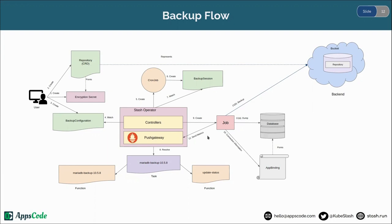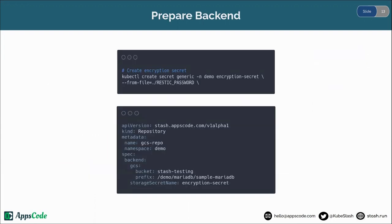Now let's prepare our backend. First we will create a secret — the encryption secret that will be used by Stash to encrypt the backup data. Then we are going to create a repository. As we are using Google Cloud Storage, we are providing the bucket and the path where the data will be stored, and also the encryption secret. Let's create these resources.